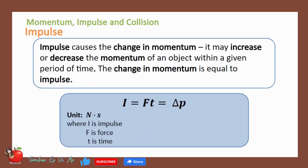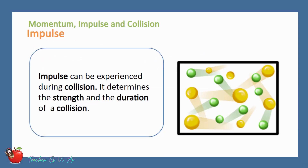Impulse causes the change in momentum. It may increase or decrease the momentum of an object within a given period of time. The change in momentum is equal to the impulse, which is the product of force and time. Impulse can be experienced during a collision. It determines the strength and the duration of a collision.